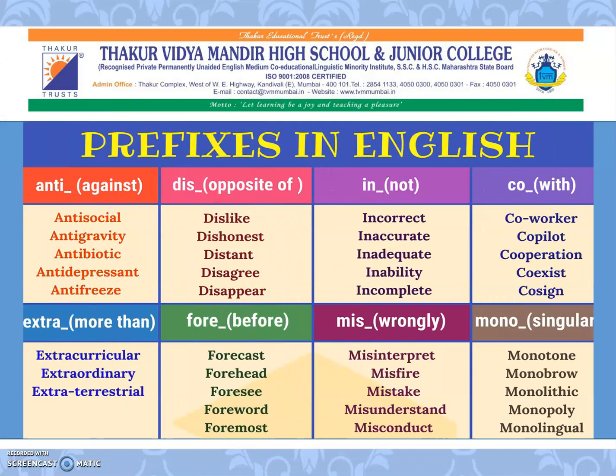The prefix ANTI means opposite of: anti-social, anti-gravity, antibiotic, anti-depressant. DIS means opposite: dislike, dishonest, distant, disagree, disappear. IN means not: incorrect, inaccurate, inadequate, inability, incomplete. CO means with: co-worker, co-pilot, co-operation, co-exist, co-sign.